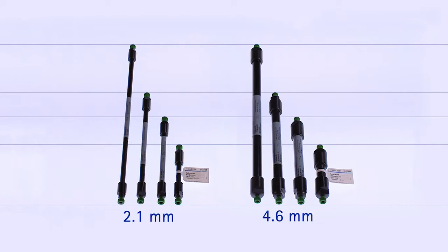SeQuant ZickHilloc columns are available with 2.1 and 4.6 mm internal diameter and column lengths of 50, 100, 150, and 250 mm.